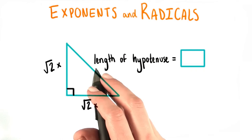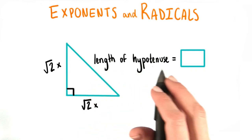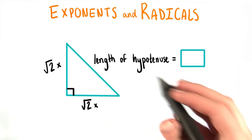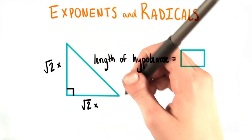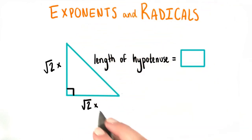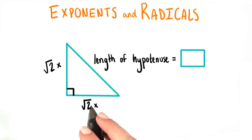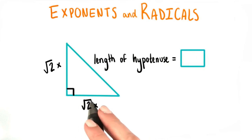What then is the length of the hypotenuse of this triangle, or the length of this longest side? Be super careful about which factors are under the radical sign.